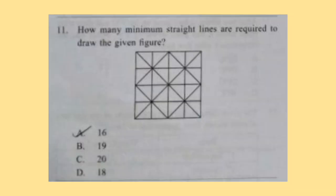Question 11: How many minimum straight lines are required to draw the given figure? Look at the figure and try to find out the answer. Here there are 5 vertical lines, 5 horizontal lines, and 6 slanting lines. So option A, 16, is the correct answer.